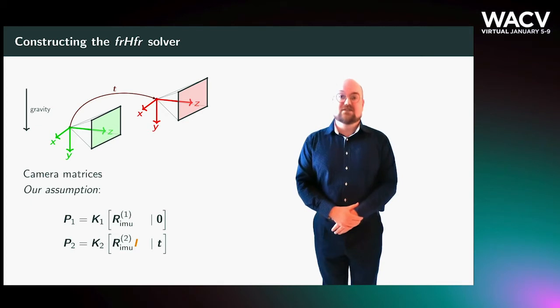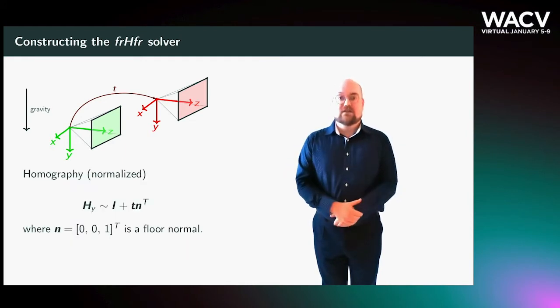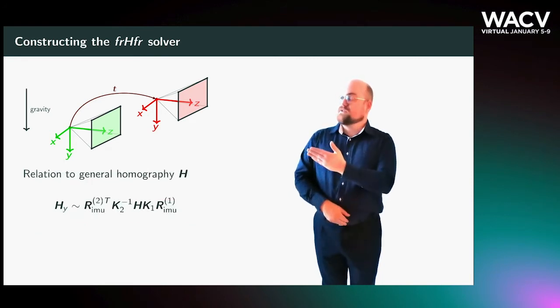So how did we create the solvers? Let's go back to the camera matrices. Here the only extrinsic parameter is the translation vector. If we normalize the point correspondence with the calibration matrix, and apply the rotation data from the IMU, we get a homography on the following form. Again, the only unknown is the translation. This normalized homography is connected to the general homography through the following relation.